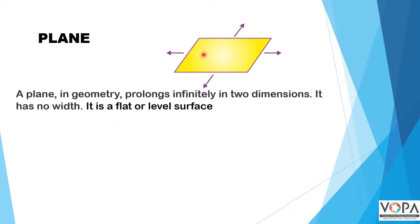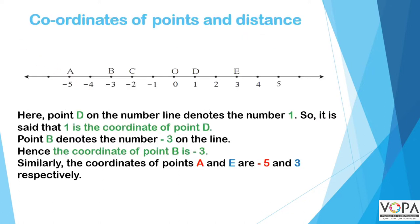A plane in geometry extends infinitely in two dimensions — it has no width. You can extend it in any direction, so it is a flat or level surface. For example, a blackboard is a plane, a wall is a plane.